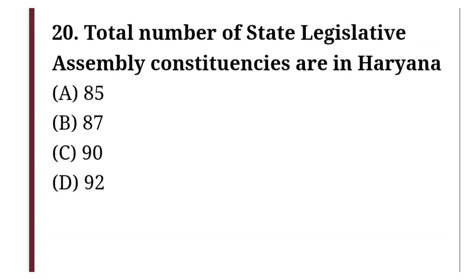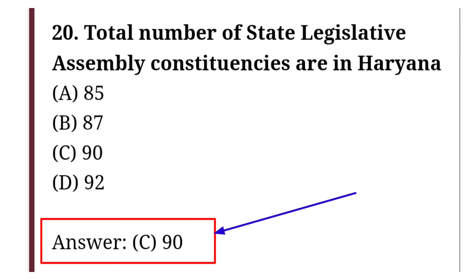How many state legislative assembly constituencies are there in Haryana? Option A: 85, option B: 87, option C: 90, option D: 92. The correct answer is option C, that is 90.